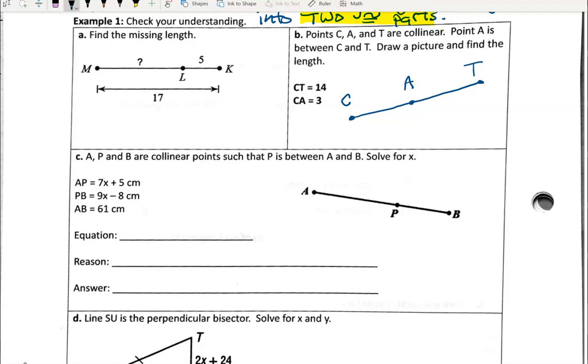Draw a picture and find the length. CT is 14, so I'm going to mark that 14. CA is 3. Find the missing length. The missing length here is AT. I'm just going to let that be X.